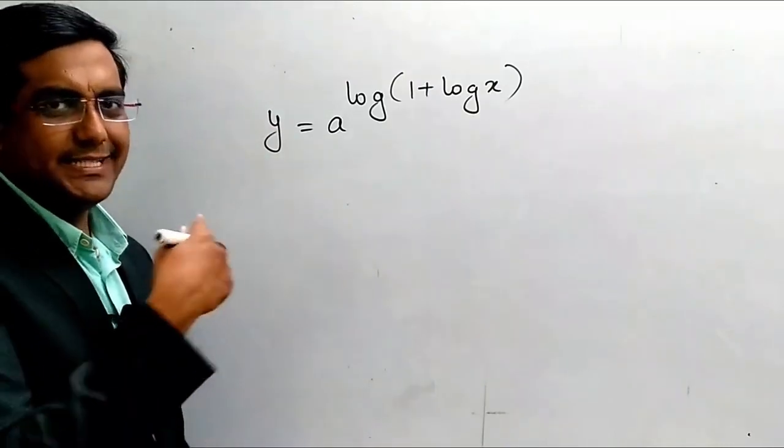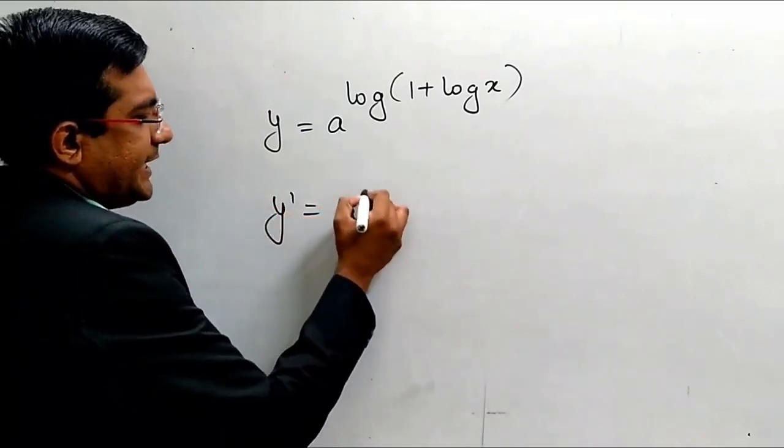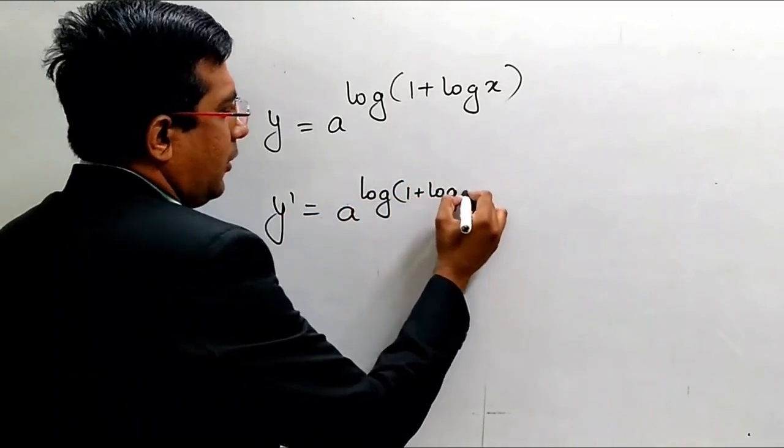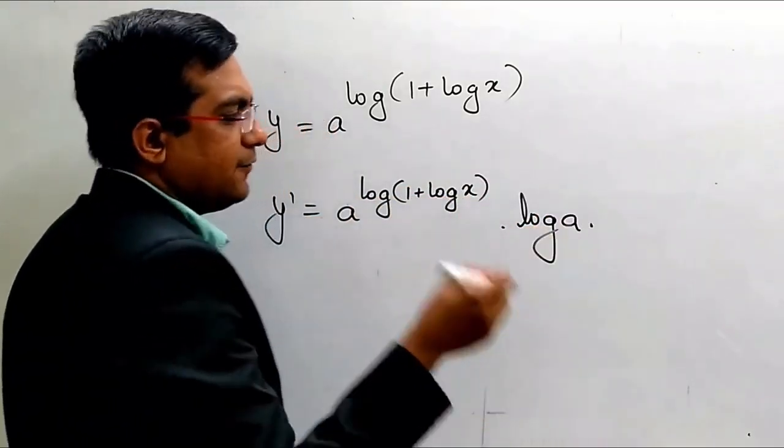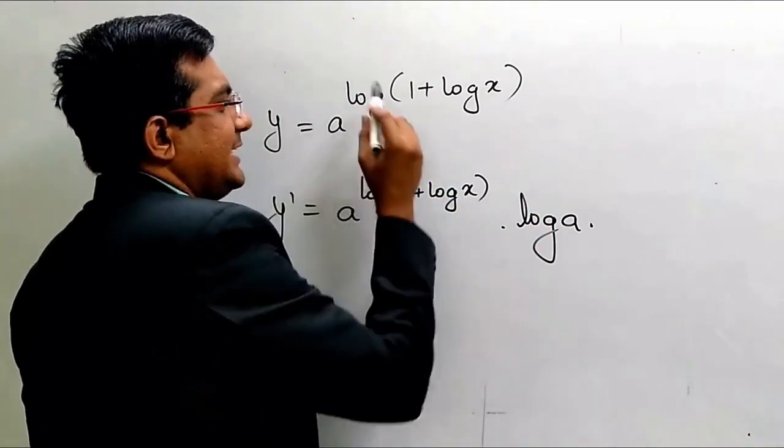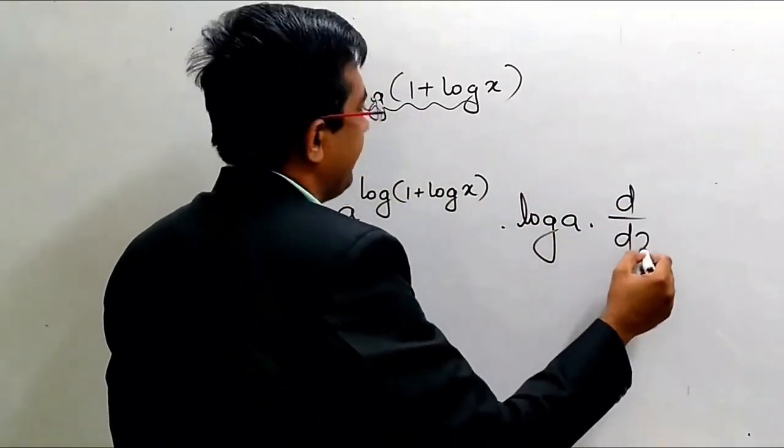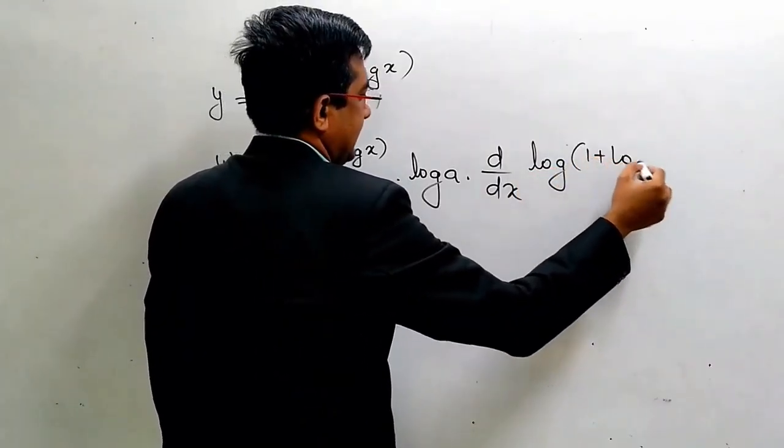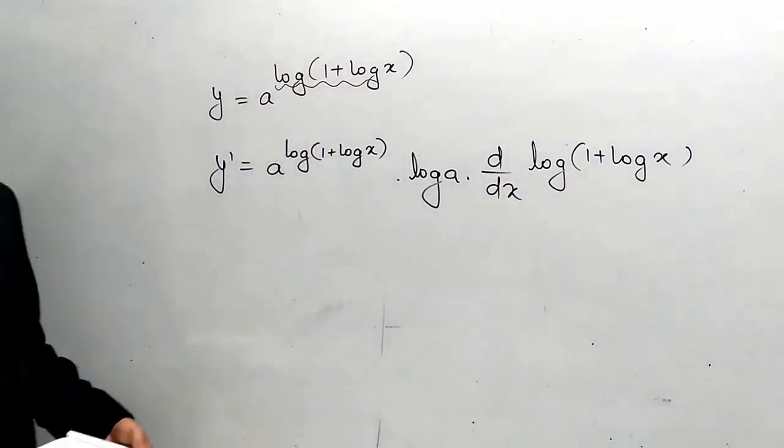So this derivative will directly go: a raised to x, log of a. But x was not x, which was not x. Again, it is the derivative. I think you will do it. Okay, have a note of it.